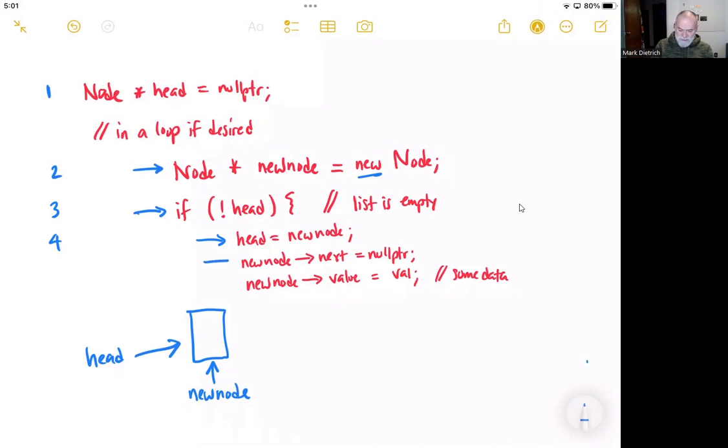Then we tell new node arrow next to point to the null pointer. So new node is currently pointing to that node, and its new node arrow next value is this pointer right here. And we're going to tell it, go ahead and point to the null pointer. And then, presuming we got some value or some data or some object to insert into this node's value field, then we would go ahead and do that there. And that assignment, again, uses that arrow operator for new node arrow value.